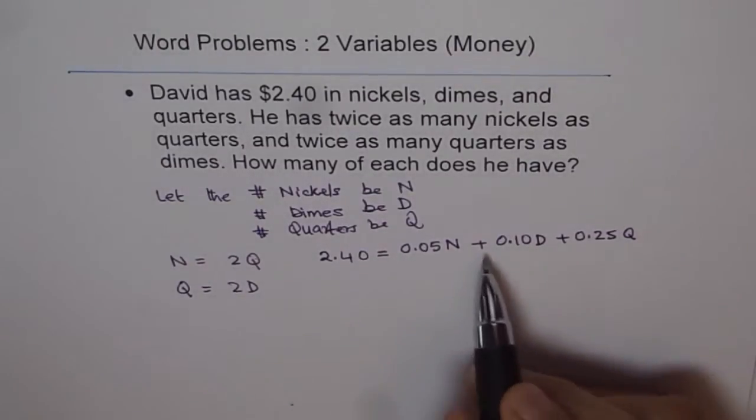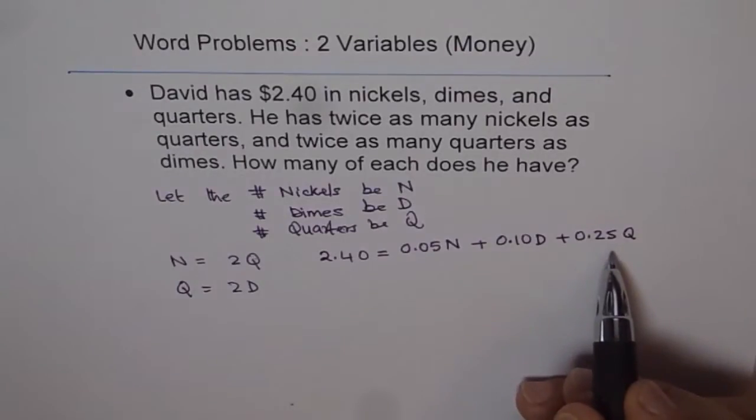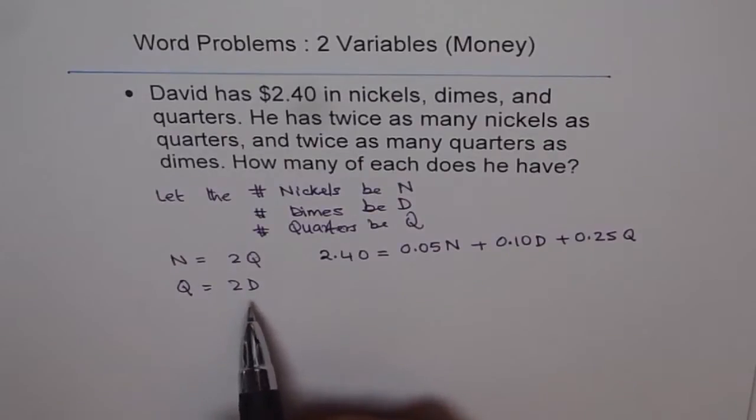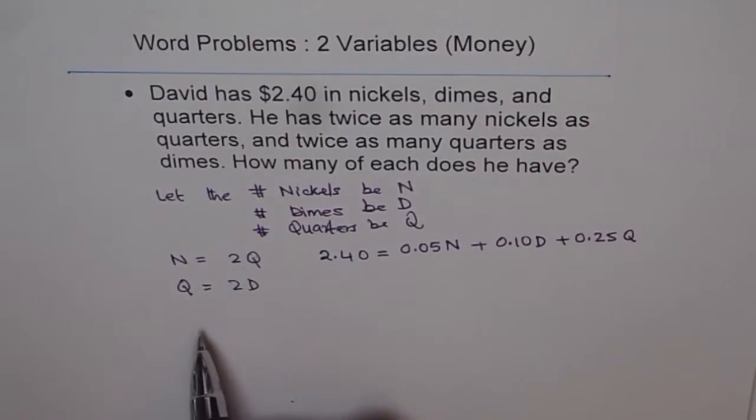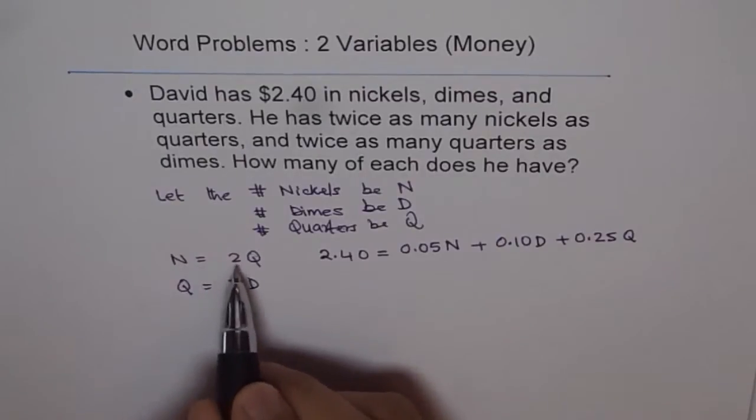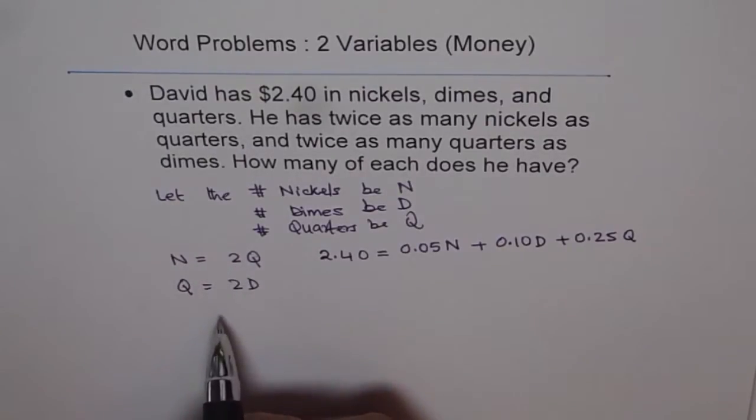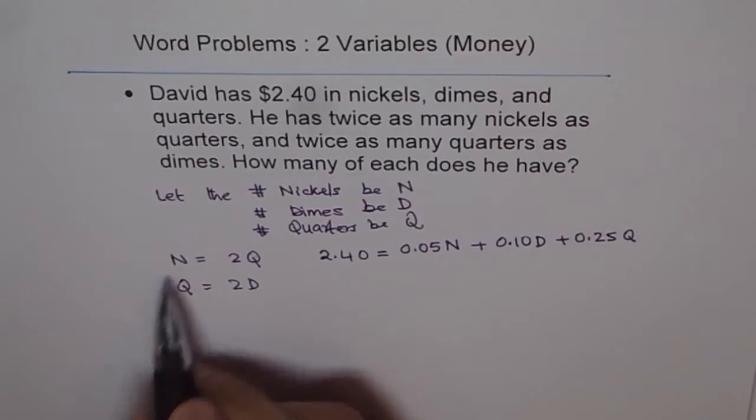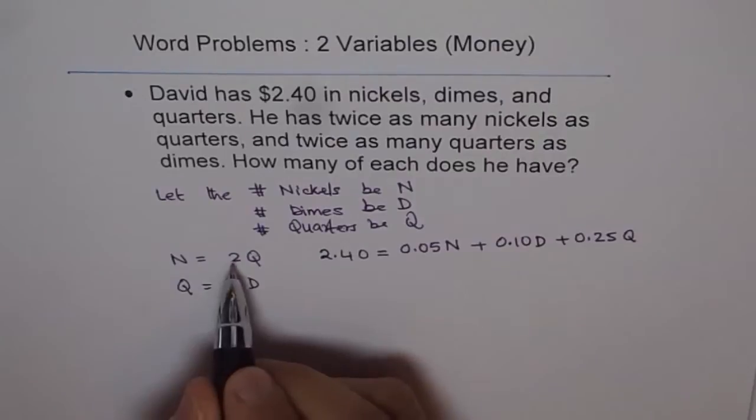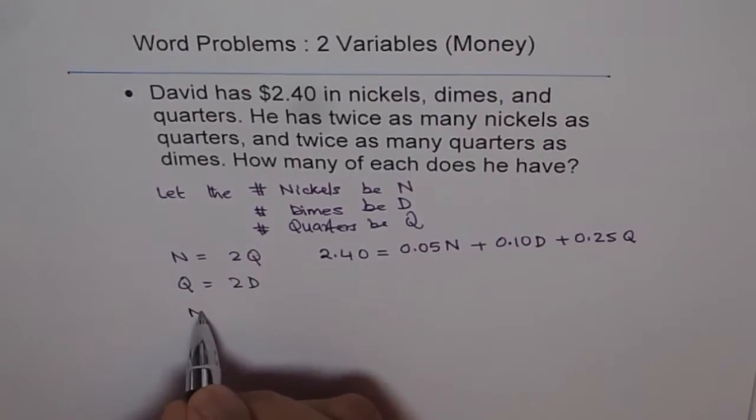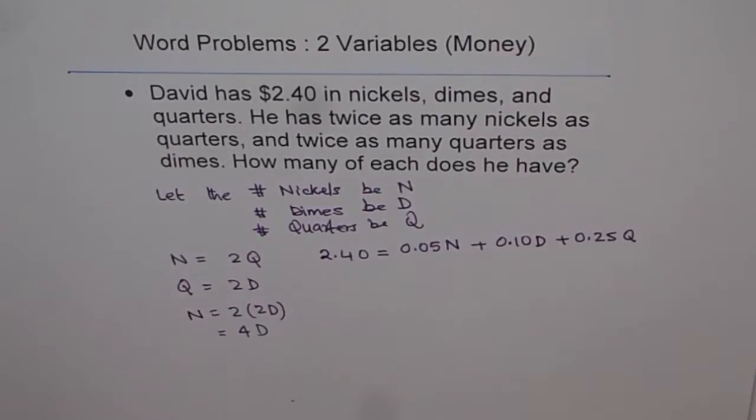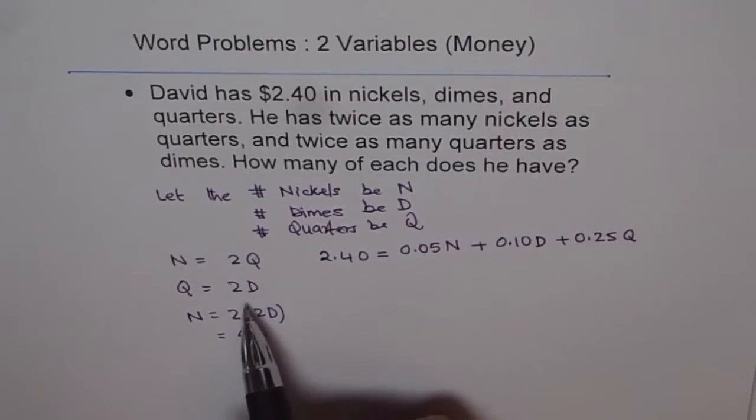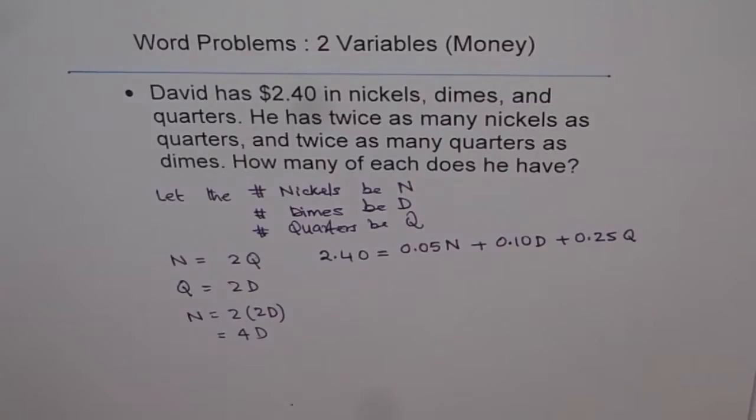Now there are three variables but just one equation here. How to solve it? The best way is to write your variables in terms of one thing. Nickels is two quarters and quarters is two dimes. So we can write N equals two times two D. That means N is 4D. So we get our equation where we have everything in terms of dimes. We'll calculate how many dimes we have and then find the rest.